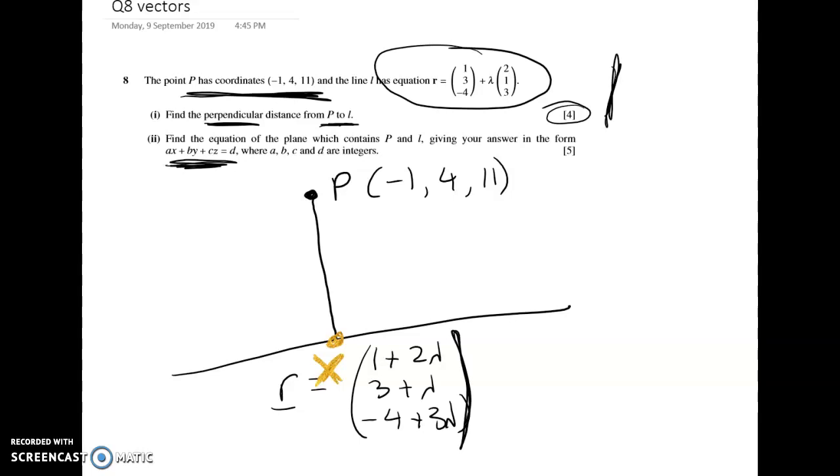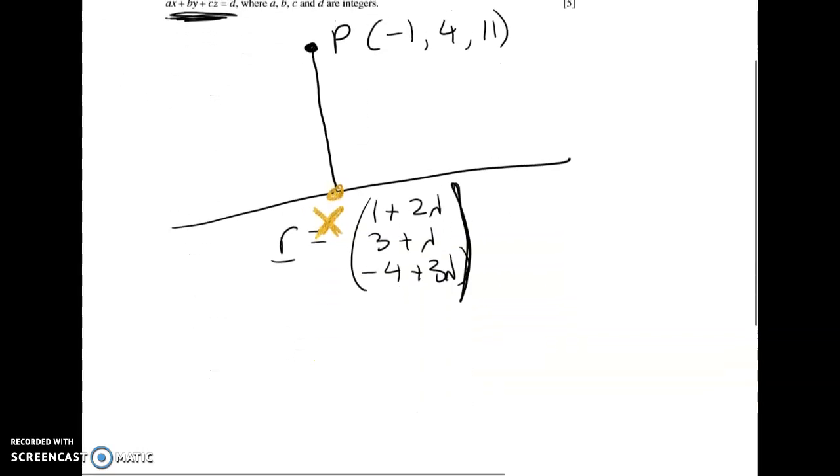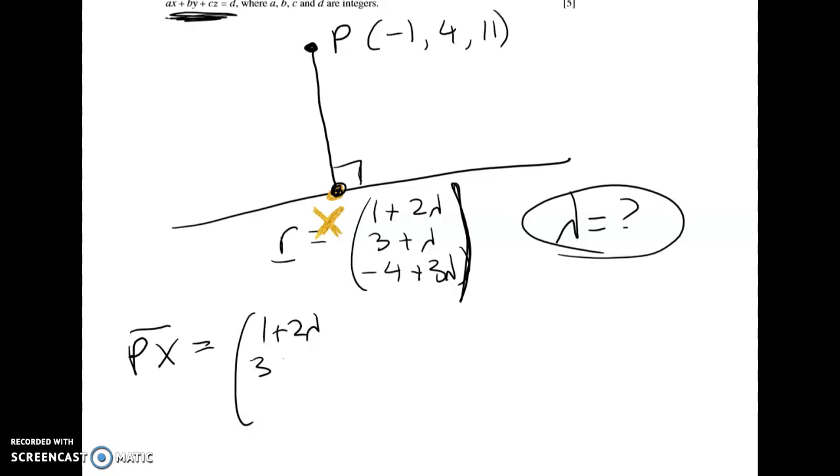The first thing I'm going to do is find a vector from P to X. Basically what we're looking for is the value of lambda on that line that's going to give me that point, and to do that we're going to use the dot product because we know that the dot product must be zero when two vectors are perpendicular. So first we're going to find the vector from P to X. We'll start by writing down the coordinates of X. We don't know that yet, but it's this, and then we take away our starting point: minus -1, minus 4, minus 11.